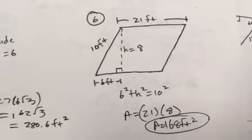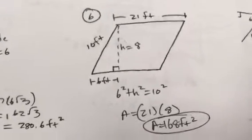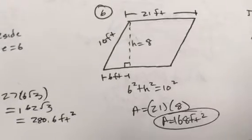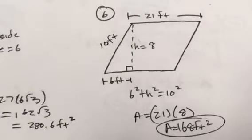Again, you could have used a little bit of sine. You could have said sine 60 is h over 12, and you've gotten 10.4.